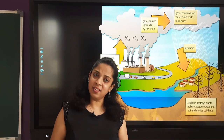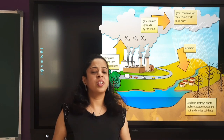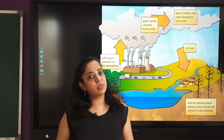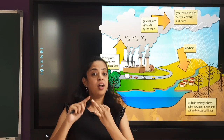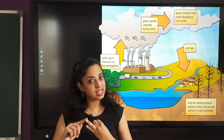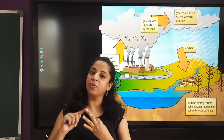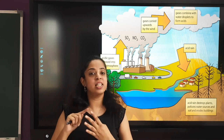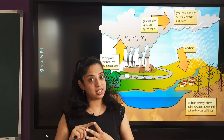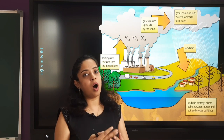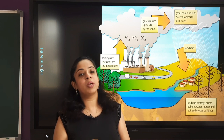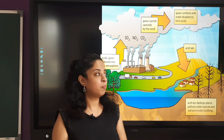Acid rain is generally a complex mixture of nitrous acid, nitric acid, sulfurous acid, and sulfuric acid. As we go ahead in the lecture, I will tell you how all four of them are formed.